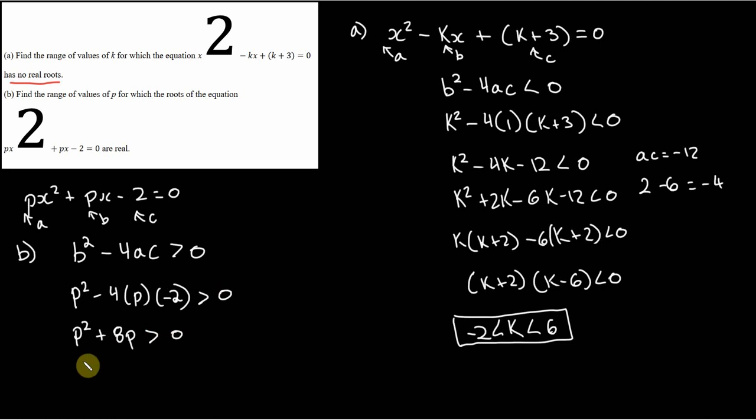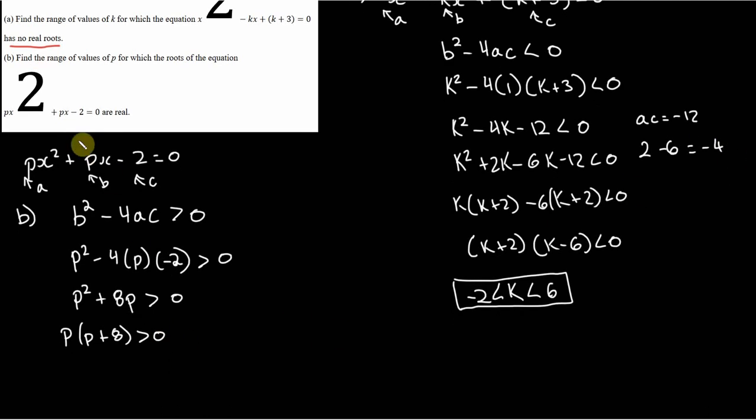So we factor out a p here. And we end up with p plus 8. That's greater than 0. And so our range of values of p, we could say that p is going to be greater than negative 8, right? Because that's negative 8. And it's going to be less than 0, right there.